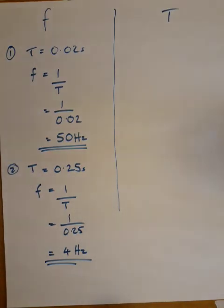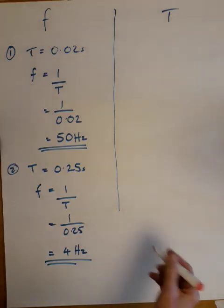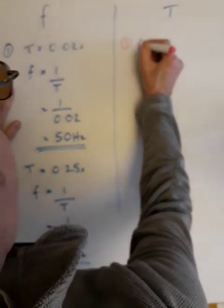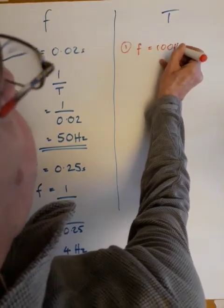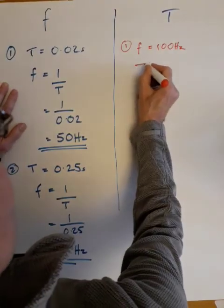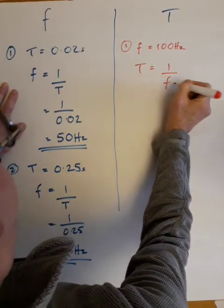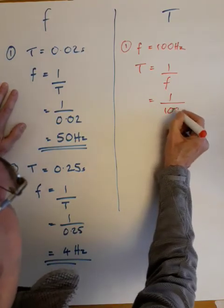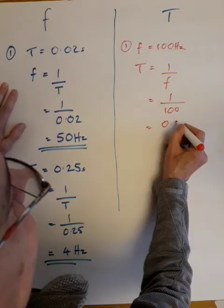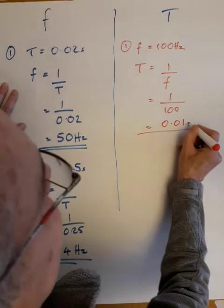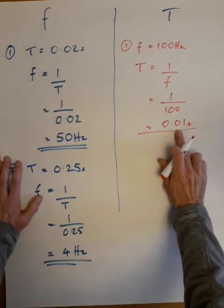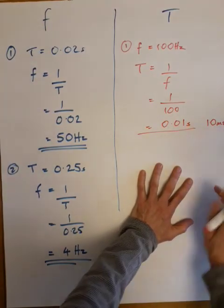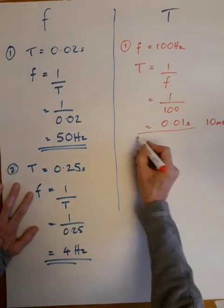Quickly moving on to the examples under periodic time. Example 1: the frequency is 100 hertz. So T = 1/F = 1/100 = 0.01 seconds. You could rewrite this as 10 milliseconds.